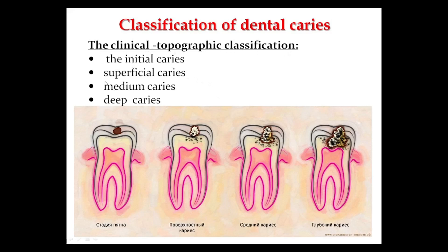The first classification is the clinical topography classification. According to clinic, there are four types of caries. First: initial caries, also called the stage of spot. Second: superficial caries, which is caries only in the enamel. Third: medium caries, involving both enamel and dentin. Fourth: deep caries, a deep process reaching almost the pulp, with possible initial changes in the pulp.